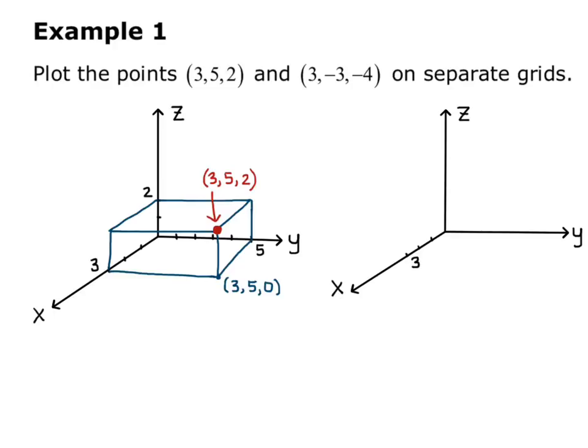Now, on the second point, 3, negative 3, negative 4, we come out 3 in the x-direction, and now we're going to go to negative 3 in the y-direction, so I draw my negative axes. So it's like the negative x-axis is going into the page, and the negative y-axis is going to the left. So I come out 3 in the negative y-direction, so to the left of the origin.